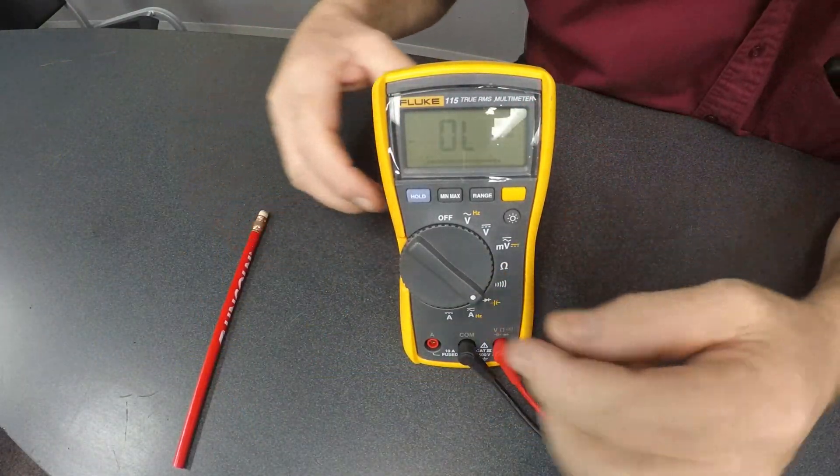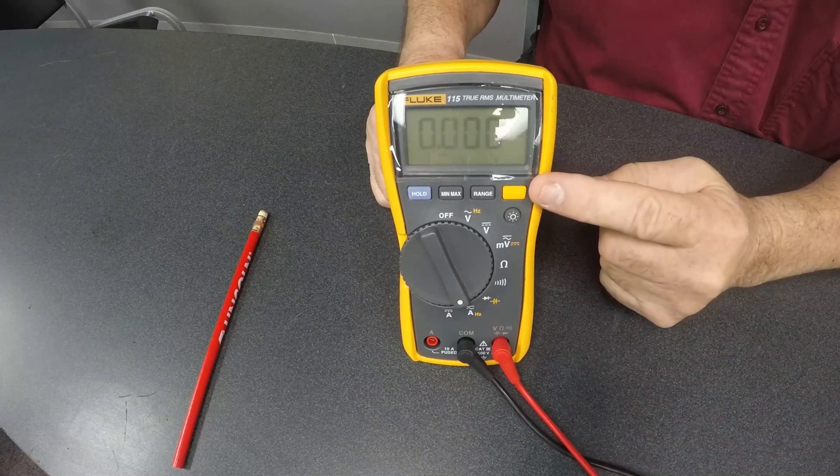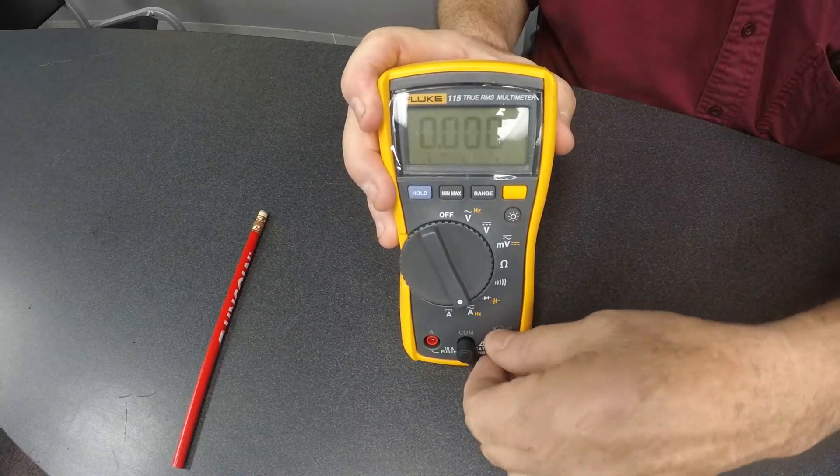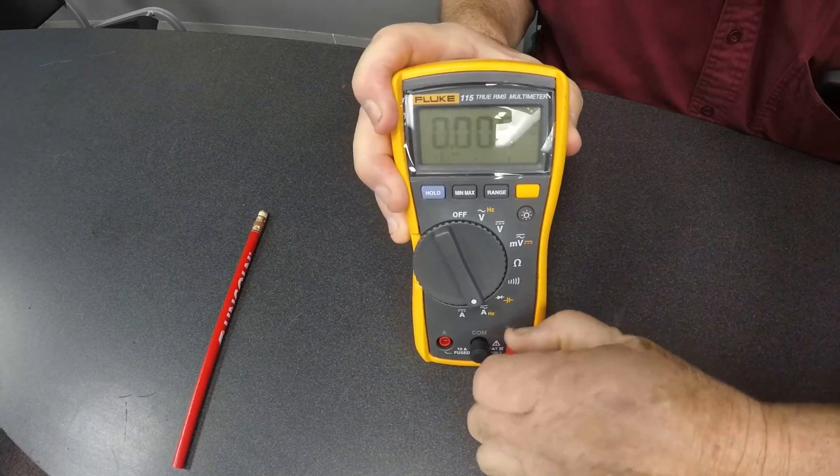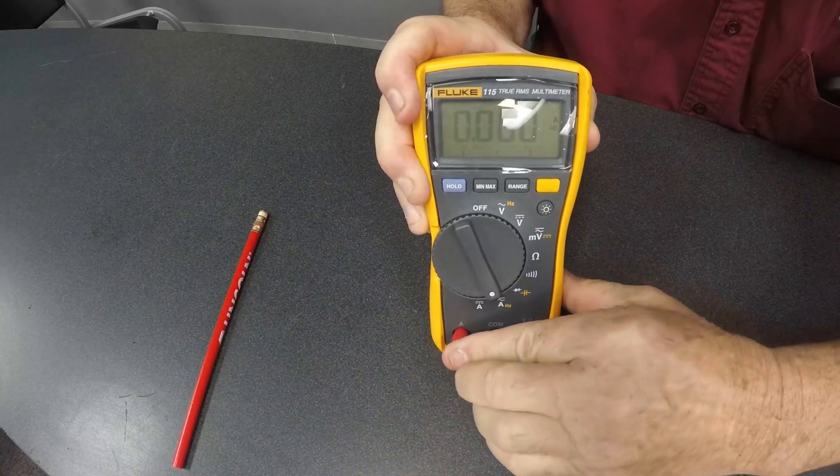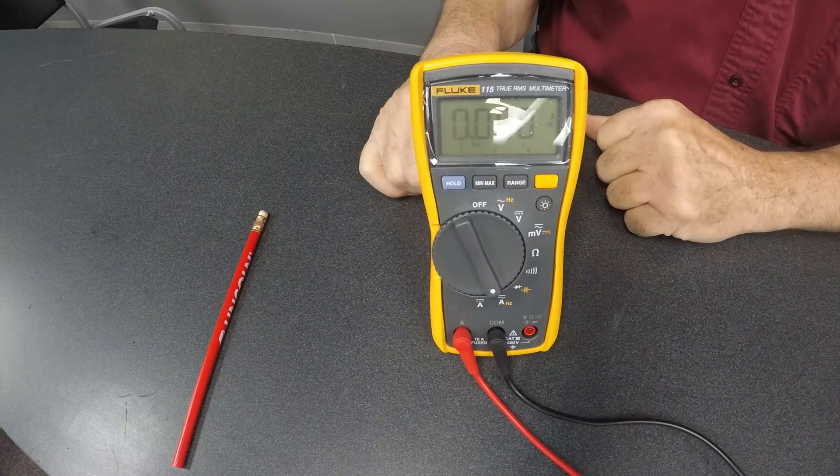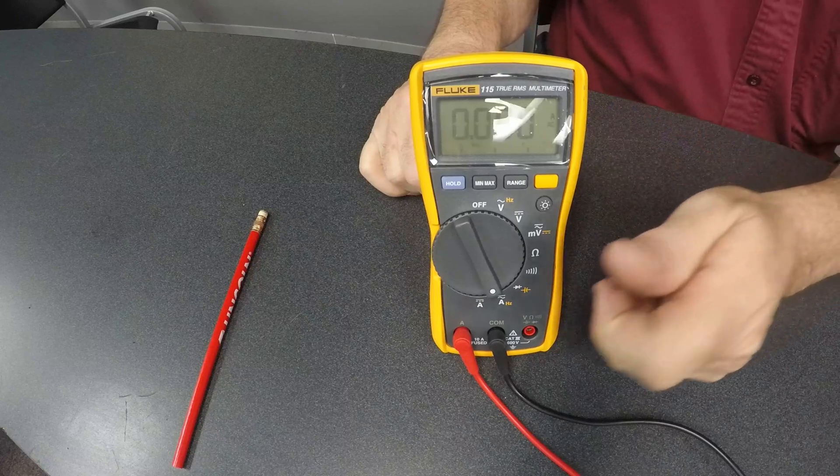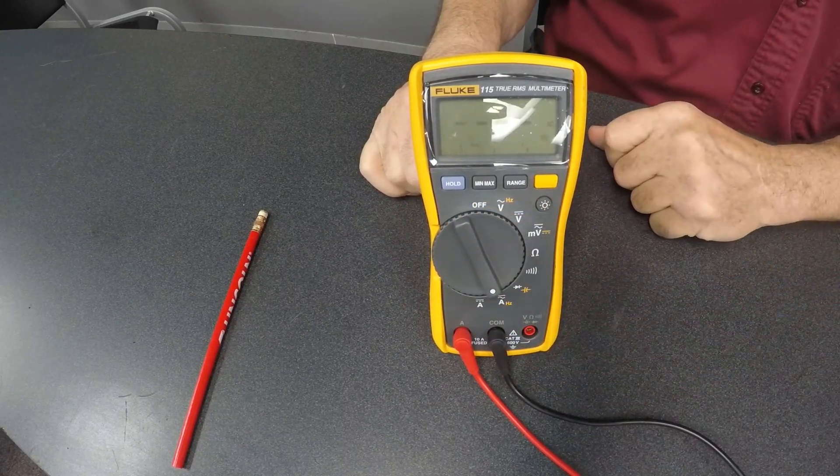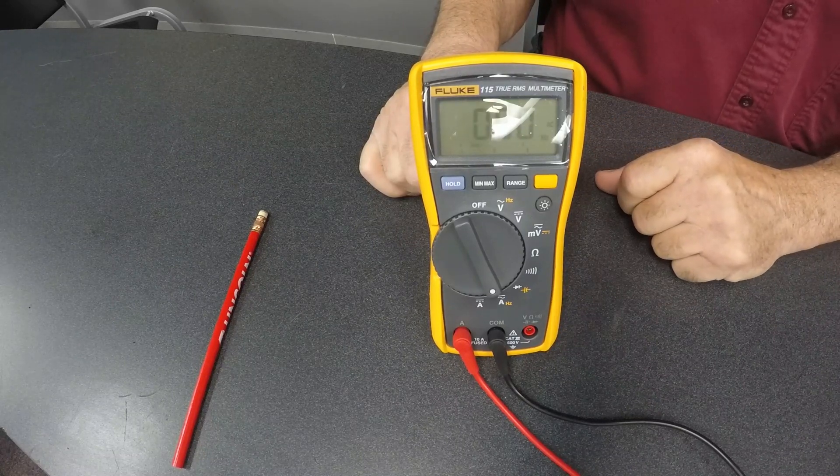The next one we're going to do is AC amperage. As you can see on here, it says lead. We have to take the lead out of the V-jack, which is for voltage. We take the red lead out of the V-jack, and we move it over to the A-jack for amperage. And we can test amperage. Remember, we test amperage in series, in line. Then the next one, then we hit the yellow button here, and we can check the hertz on amperage, how much is going on there.